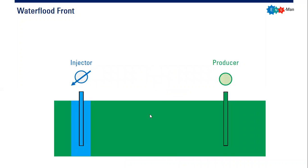We have the reservoir under water flood or water injection. You can see we have an injector well and a producing well or producer. We inject water from the injector, and you can see the progress of the water moving away from the wellbore and towards into the reservoir.